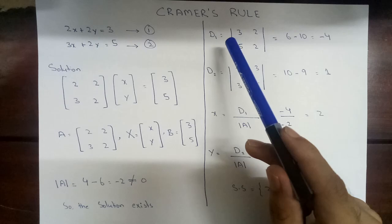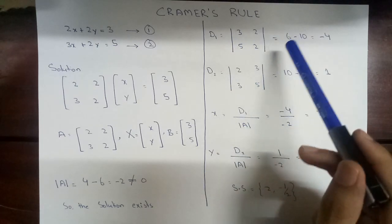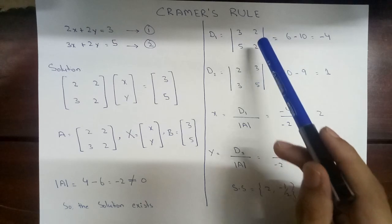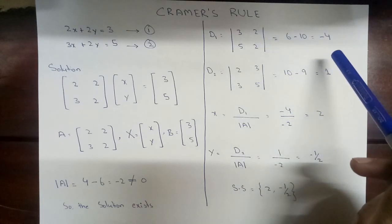The determinant of D1 will be 3 times 2, 6, minus 5 times 2 will be 10. 6 minus 10 is equal to minus 4.